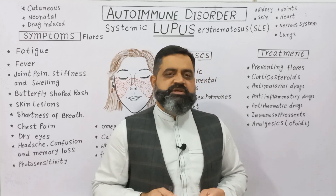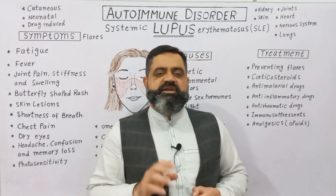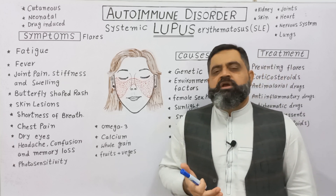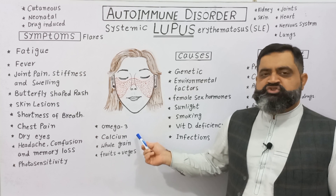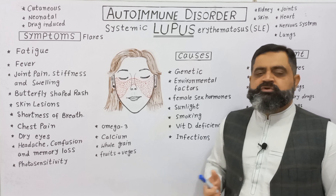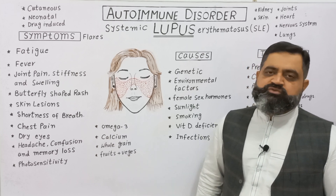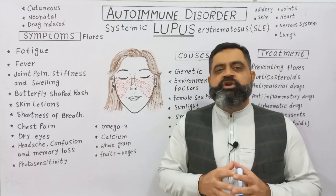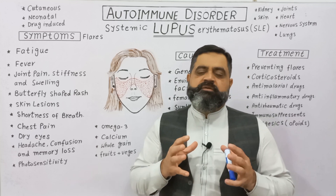Lupus patients should have a special diet containing a lot of omega-3s, which can be gained from fish or fish oil, calcium-rich foods like milk, cheese, and yogurt, and whole grains to promote a healthy digestive system. Fruits and vegetables can also be used to boost immunity and maintain regular living for a person suffering from lupus.